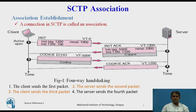Association Establishment in SCTP requires a four-way handshake. In this procedure, a process normally called a client wants to establish an association with another process called server using SCTP as the transport layer protocol. Like TCP, the SCTP server needs to be prepared to receive any association, which is passive open. Association Establishment is initiated by the client, which is active open.